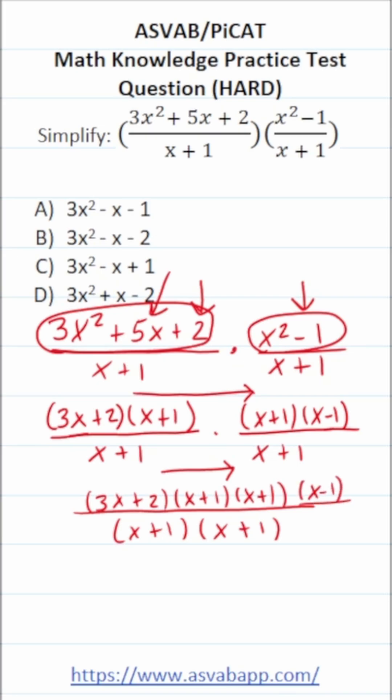Now, as we would with fractions, we're going to cross out corresponding values in our numerator and denominator. So we're going to cross out these corresponding pairs of x plus 1 there and there. And in doing so, we're left with this: 3x plus 2 times x minus 1.